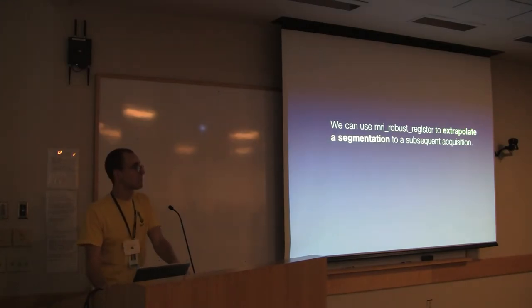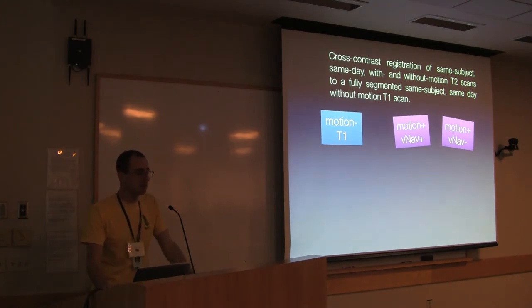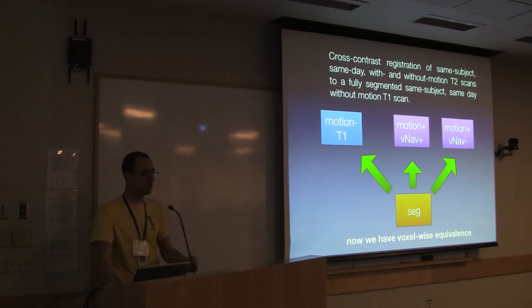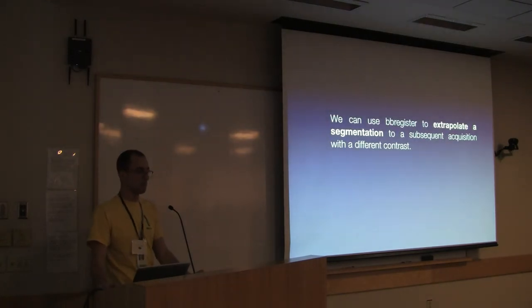Even more importantly is when you have a different contrast, for example with T2 scans. Again, we had both with motion T2 scans with and without the motion correction, and we had a known good T1 scan. Here we take our known good T1 scans, we produce the segmentation using the standard cross-sectional stream, and now we use the BB register tool which brings those T2 scans into register with the T1. Now we've got voxel-wise equivalence, we can populate that segmentation, those labels, back onto the T2 scans, even though FreeSurfer can't natively segment the T2 scans. Using BB register we can bring it into a space where we can populate those labels onto the T2, and now we can look and see whether there were changes in tissue intensity. The labels are consistent. BB register allows us to extrapolate a segmentation to a subsequent acquisition with a different contrast.